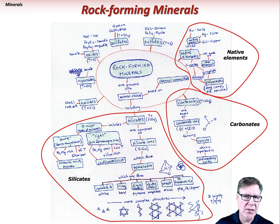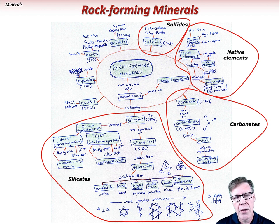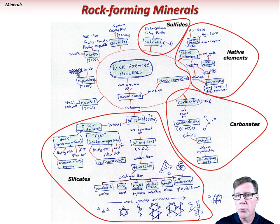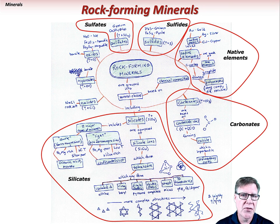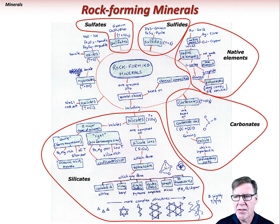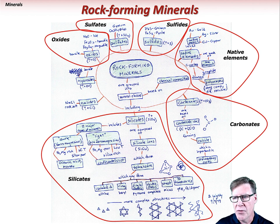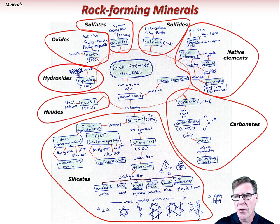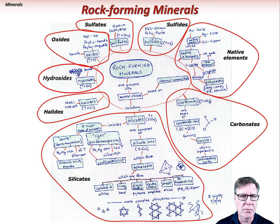Diamond is considered a native element because it's basically carbon bound together very strongly with covalent bonds. Sulfides are minerals that are some element plus sulfur — that could be lead sulfide (galena) or iron sulfide (pyrite, fool's gold). Sulfates are some element plus SO4. Calcium sulfate would be gypsum, a very important sedimentary mineral. Oxides are elements plus oxygen; iron oxides are very common, and water ice is basically an oxide. Hydroxides include the important aluminum mineral bauxite. Halides are some element plus chlorine — typically sodium plus chlorine, sodium chloride, which is rock salt.